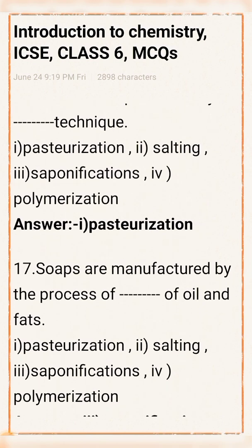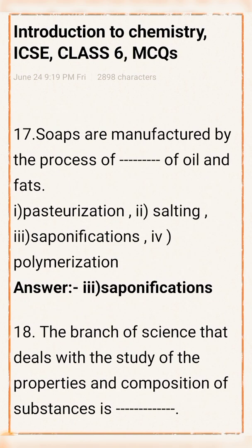Question number 17: Soaps are manufactured by the process of oils and fats using which method? Option 1: Pasteurization. Option 2: Salting. Option 3: Saponification. Option 4: Polymerization. Answer: Option 3, saponification, is the right answer.